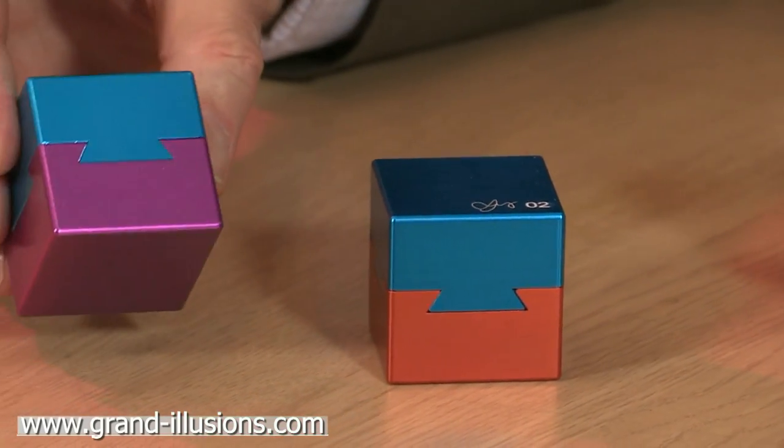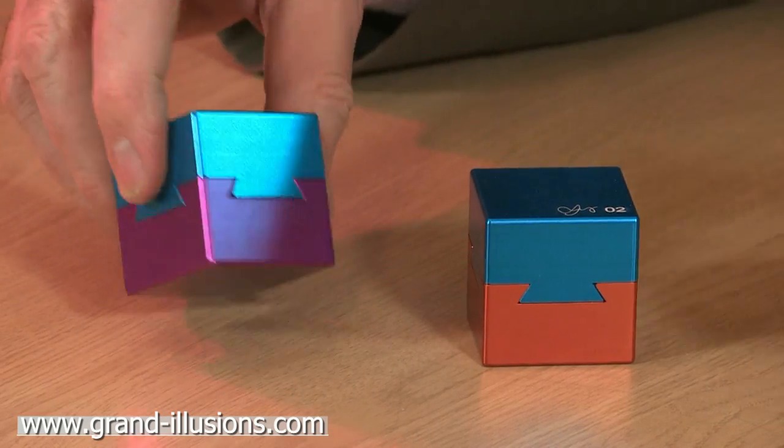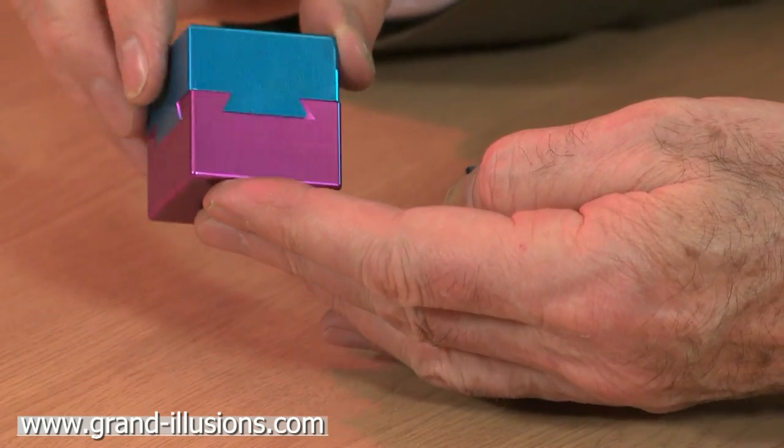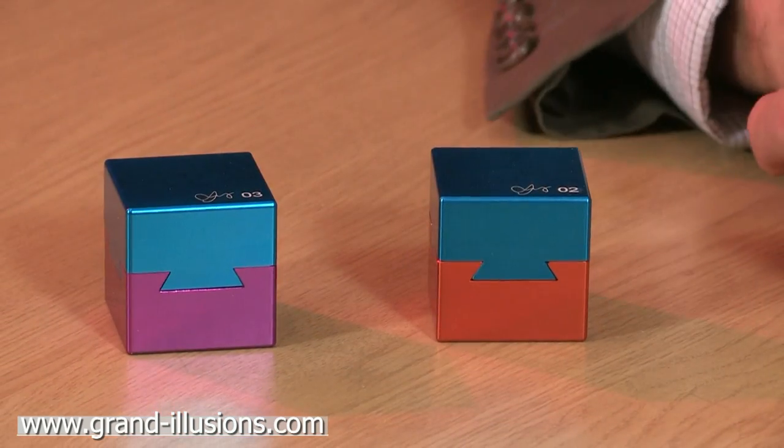And over here we have what looks like an identical one. It's a different colour at the base, and it's also got dovetails on all four sides, but it's actually got a different mechanism inside. You have to find a completely different way of solving it.